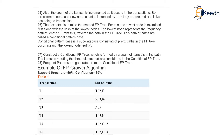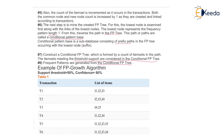The final step is to mine the created FP tree. For this, the lowest node is examined first along with the links of the lowest node. The lowest node represents the frequent pattern length as 1. They traverse the path in the FP tree — these paths are called the conditional pattern base. A conditional pattern base is a sub-database consisting of a prefix path in the FP tree occurring with the lowest node. The seventh step involves constructing the conditional FP tree formed by the count of item sets in the path, and item sets meeting the threshold support are considered. Frequent patterns are generated from the conditional FP tree.